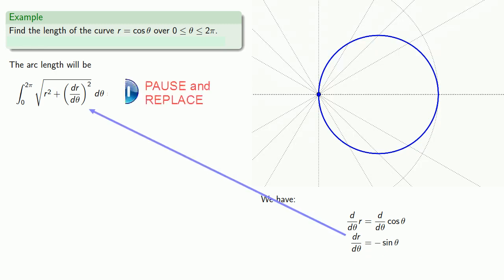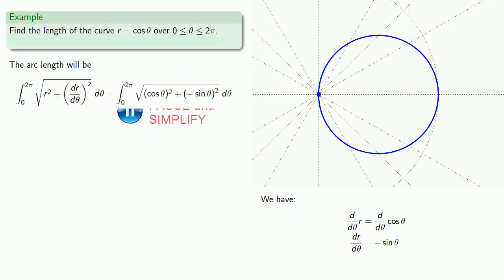I'll substitute that in. I'll do a little algebra. I'll do a little trigonometry. I'll do a little bit of calculus. And so we get an answer of 2π, which is exactly what we expected to get.